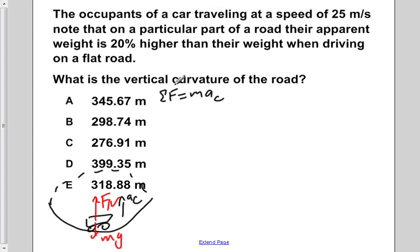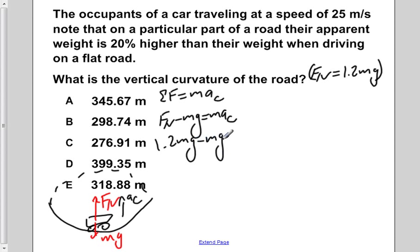We would then have Fn minus mg equals ma centripetal. Now in this case, our normal force is 20% higher, so it's 1.2 times our weight. If we plug in 1.2 mg for Fn, we have 1.2 mg minus mg equals ma centripetal. Carrying out the subtraction, we would have 0.2 mg equals ma centripetal.